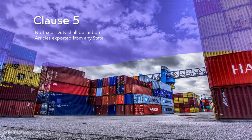Clause 5 is also known as the Export Clause, and it prohibits Congress from imposing taxes or duties on goods that are exported from any state to a foreign country. The purpose of this clause was to prevent the federal government from favoring one state over another in terms of trade and commerce, and to protect the interests of the exporting states.